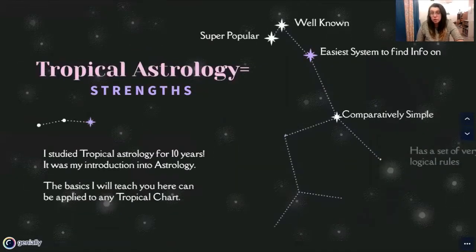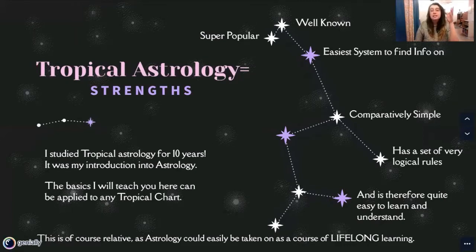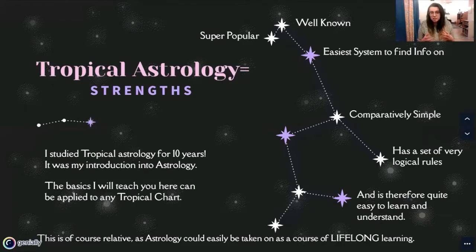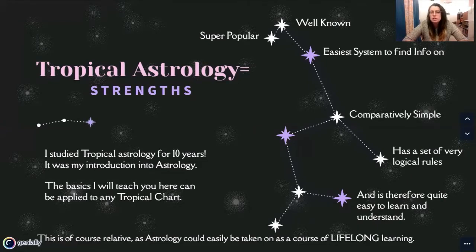Some of the strengths of tropical astrology: it is super popular and well known. It is the easiest system by far to find info on, whether you're just Googling, searching, or talking to other people about it. It is also comparatively quite simple — it has a set of very logical rules, and because of these logical rules, it is quite easy to understand when compared to some of the other systems. No matter what astrology you study, it's a subject you could be learning your entire life, but if we're just talking about the basics and the rules, tropical is a little bit on the simplest side.